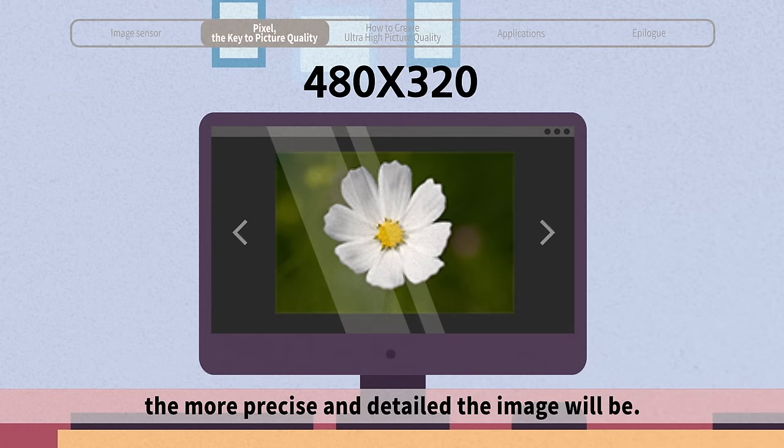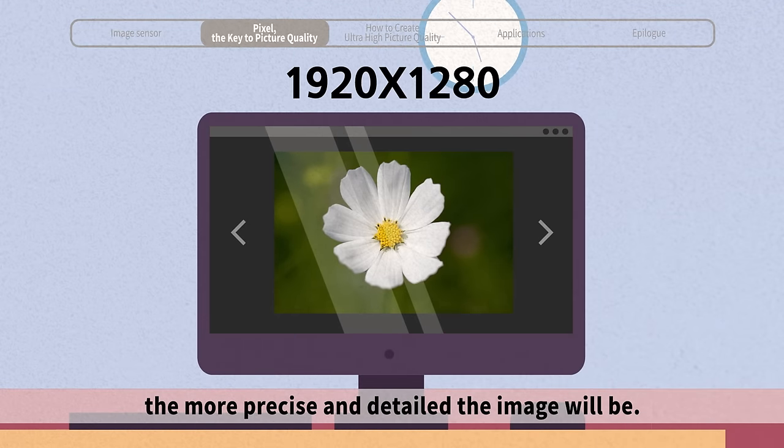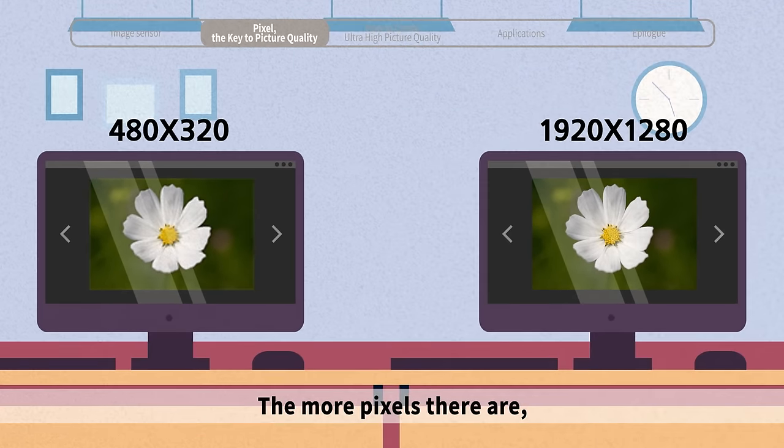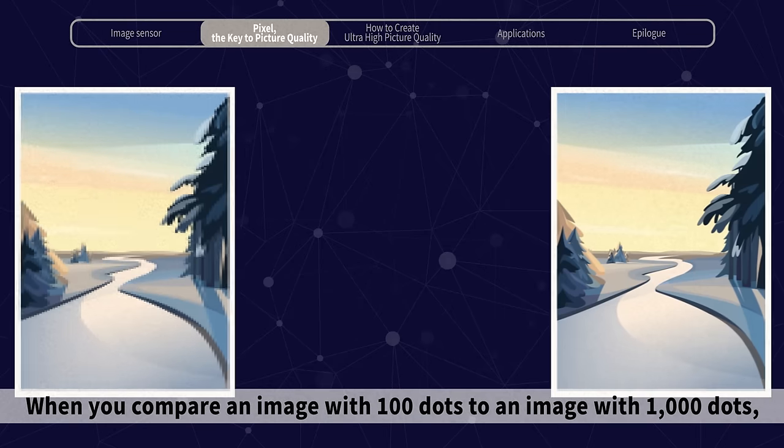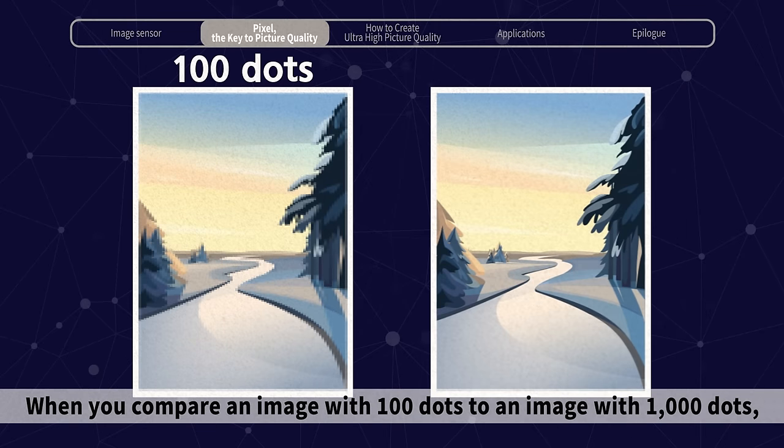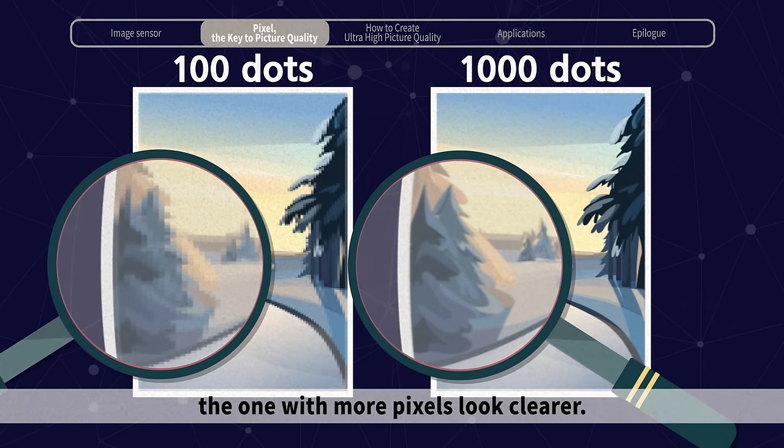The more pixels there are, the more precise and detailed the image will be. The more pixels there are, the higher resolution images you'll be able to take. When you compare an image with 100 dots to an image with 1000 dots, the one with more pixels looks clearer.